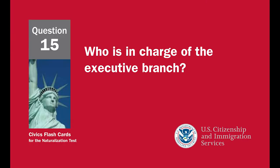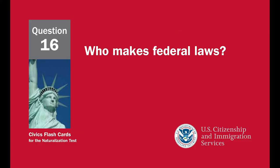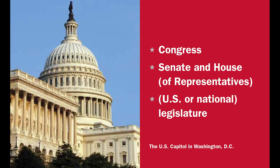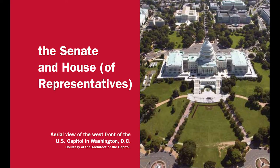Who is in charge of the executive branch? The president. Who makes federal laws? Congress, the Senate and House of Representatives, or the U.S. or National Legislature. What are the two parts of the U.S. Congress? The Senate and House of Representatives.